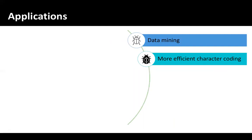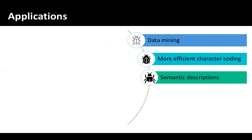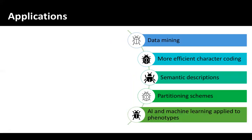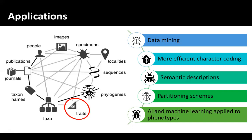We can also produce semantically enhanced descriptions at a certain level of automation, and there are already some available tools for this. We can also generate partitioning schemes for phylogenetic analysis, which we have already seen in some papers, and we can also start using technologies like artificial intelligence, machine learning, and computer vision to take a look at beetle morphology in a new light. All of this to contribute to making this trait link of the biodiversity knowledge graph stronger over time.